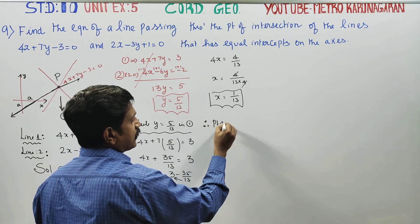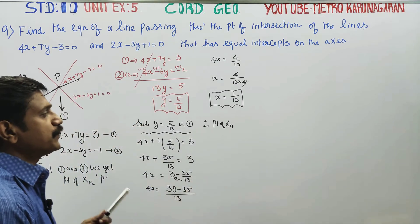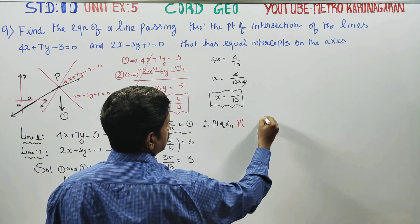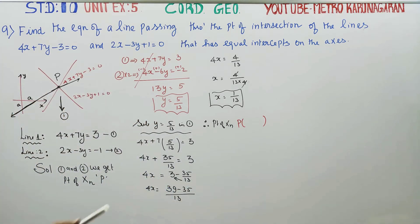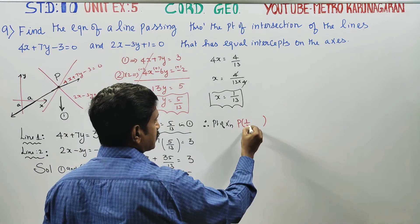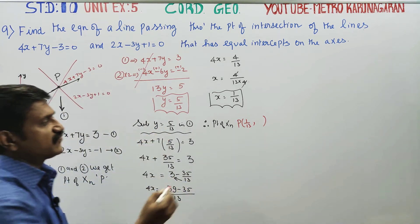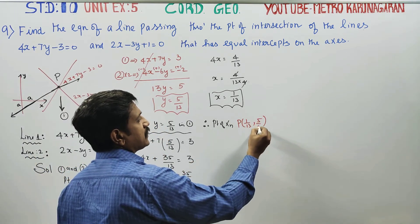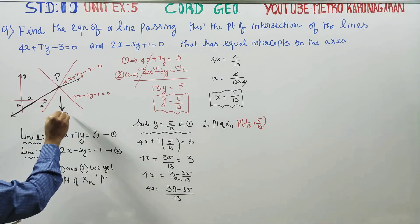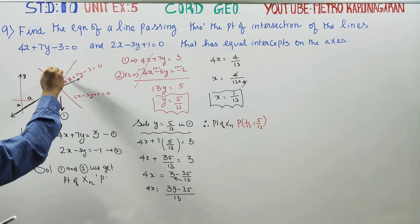Therefore, the point of intersection P has coordinates x equals 1 by 13 and y equals 5 by 13. So P is (1/13, 5/13).